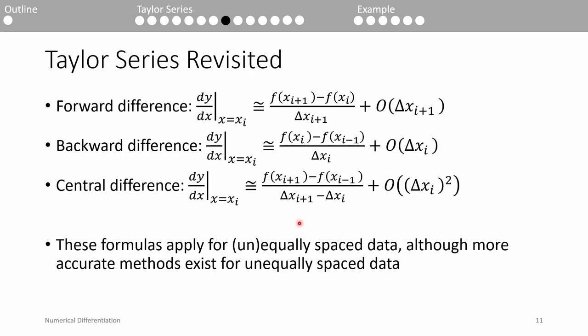We've done a lot of math so far, so let's summarize the most important points. If we have a data set and want to estimate the first derivative at a given point, we can do so three ways. We can use the forward difference, which uses the given point and the point in front of it. We can use the backward difference, which uses the current point and the point behind it. Or we can use the central difference, which uses both the point in front of and behind the point of interest. The forward and backward difference are typically less accurate than the central difference. These formulas can be used for both equally and unequally spaced x data.